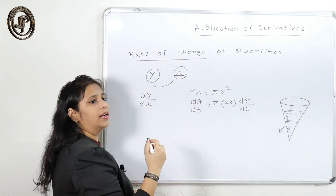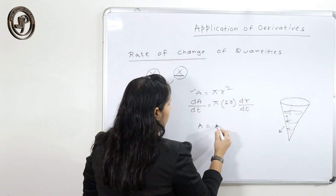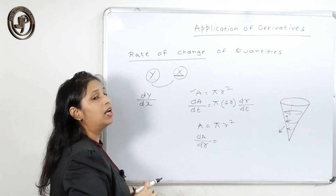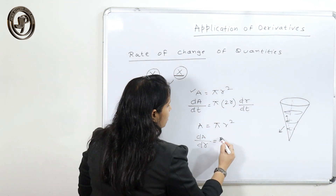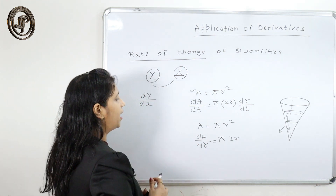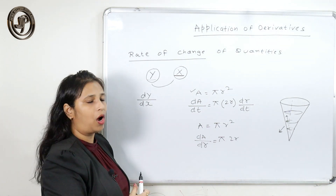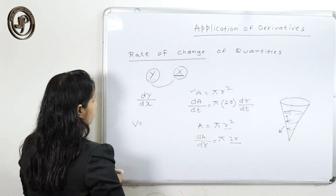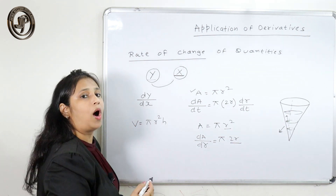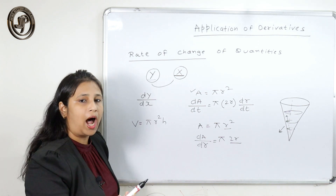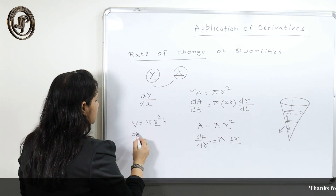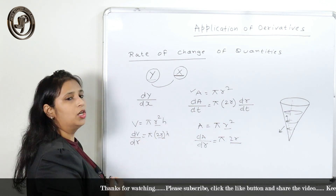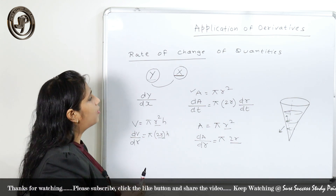If it is asked to find the rate of change with respect to radius, we write dA/dR = 2r, because we are differentiating with respect to r, so the derivative of r² is 2r only. Similarly, if volume V = πr²h and we need the rate of change with respect to radius, we find dV/dr = π·2r·h = 2πrh (when h is constant). This is how we find the rate of change.